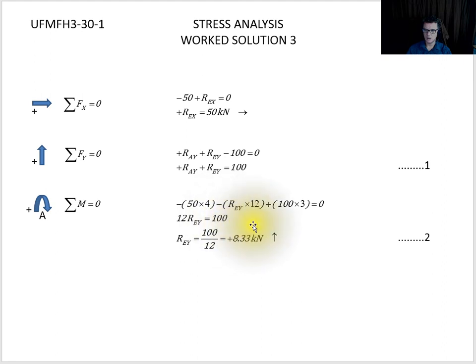Minus Rey times 12, so they're my negative moments, and then I've got a positive one of 100 times 3. Let's rearrange that so we get the unknowns on the left, the knowns on the right. Rearrange that and we find that Rey equals 8.33 kilonewtons.